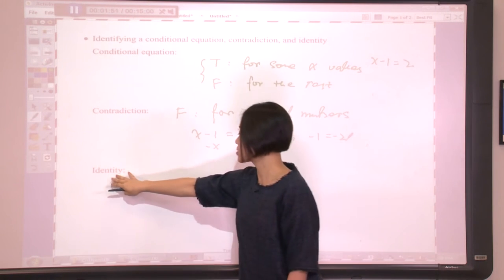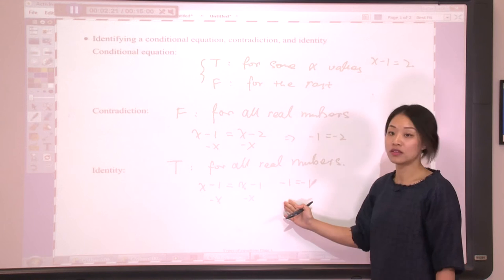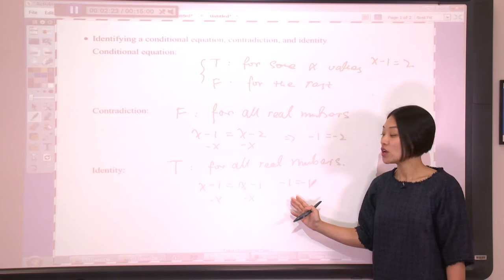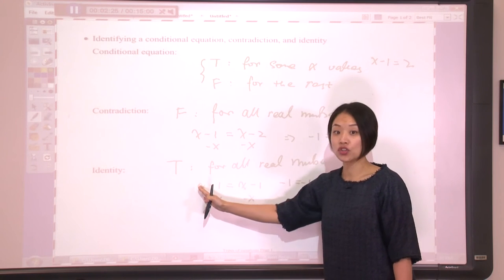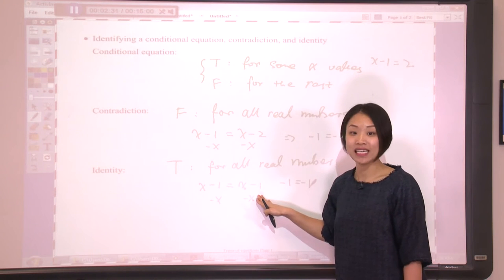And the last type is called identity. That is, no matter which number you pick for x, after you plug it back, this is always true. For example, x minus 1 equals x minus 1. We do the same trick — minus x on both sides — we're going to have negative 1 equals negative 1. This is always true. No matter which number you pick for x, you will always get negative 1 equals negative 1. So this means the original equation is an identity.